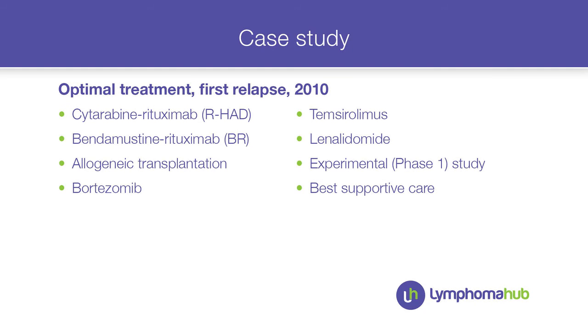This is an important message: patients where we try to spare toxicity — the elderly patients — are probably the highest-risk patients. What were the treatment options in 2010 at first relapse? We could go for conventional chemotherapy,